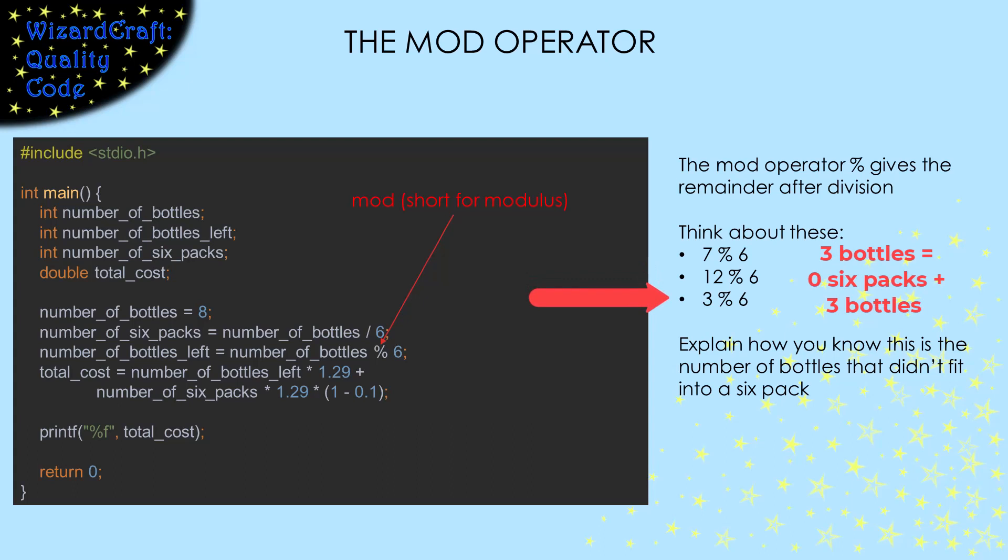If we were trying to buy any number less than six, like say three, the remainder when we divide three by six is three. Six goes into it zero times, and there are three left over. So that works for how many individual bottles we would need too. So the remainder after we divide by six will be the number of bottles that didn't fit in a six-pack, and the modulus operator is just what we needed for this calculation.